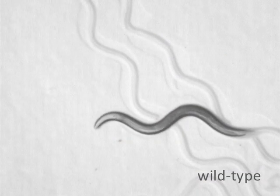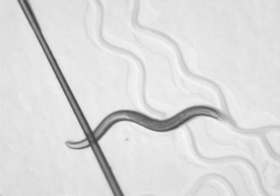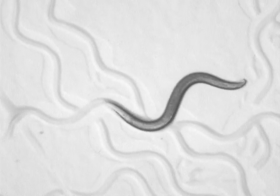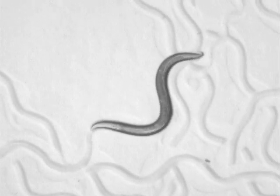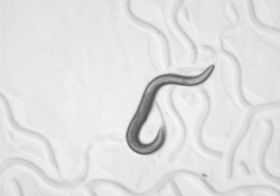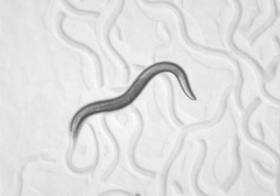If you touch the animal just behind the head with an eyelash, the animal will start backing up, and during this backing it will actually suppress these head movements. At the end of the reversal, it will turn around and move away from the stimulus and resume these head movements.